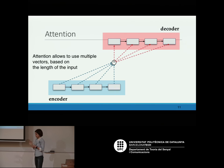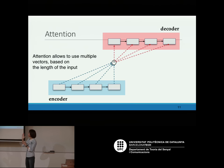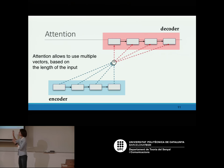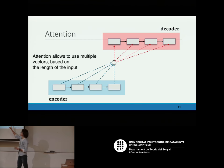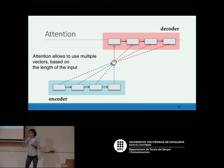The idea is that instead of having one single vector, I have different vectors depending on the word that I am translating — different vectors of attention. With the encoder-decoder this was a single vector, the same for the entire process of translation or image captioning. Here we have multiple vectors — instead of having a vector, we have a matrix, a vector of vectors.